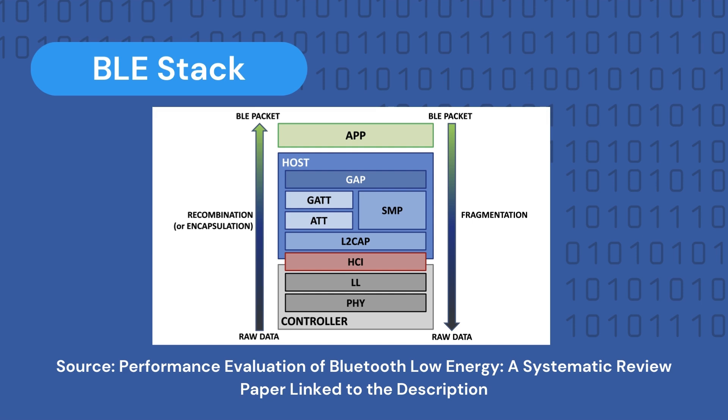The BLE protocol is structured in a stack composed of three main blocks: the controller, shown in gray; the host, shown in blue; and the app, shown in green. The Host Communication Interface, or HCI, shown in red, interfaces the communication between the controller and the host. The rectangular frames represent the different layers of the protocol, ordered in a stack starting at the bottom from the physical layer and ending at the higher-level application layer.